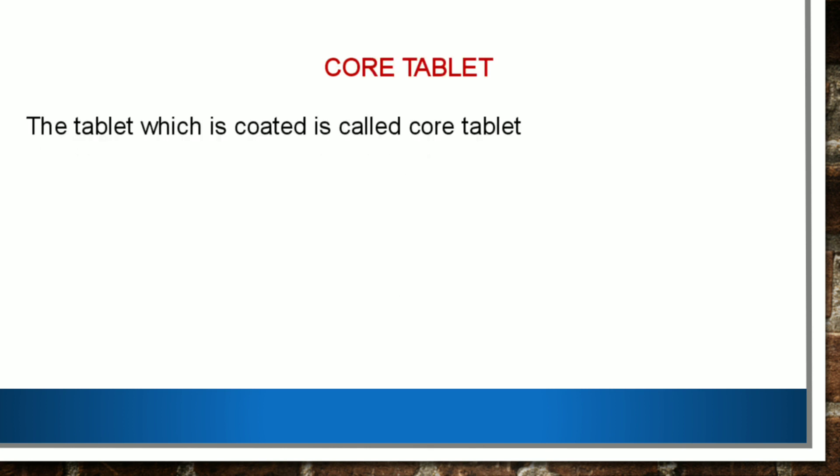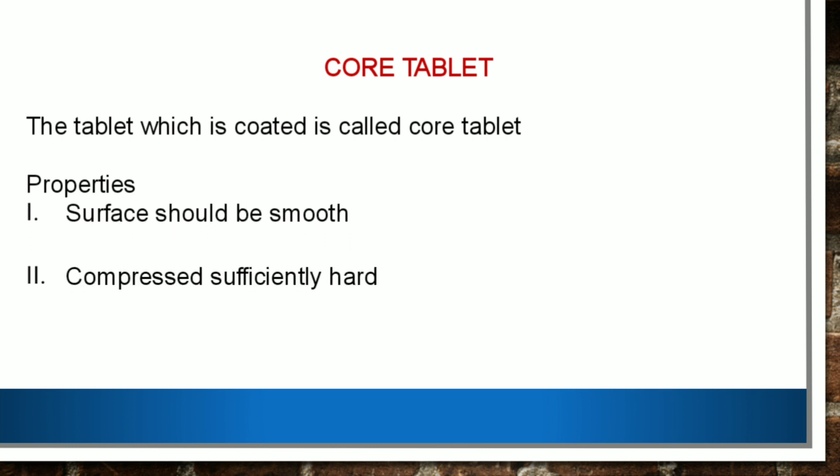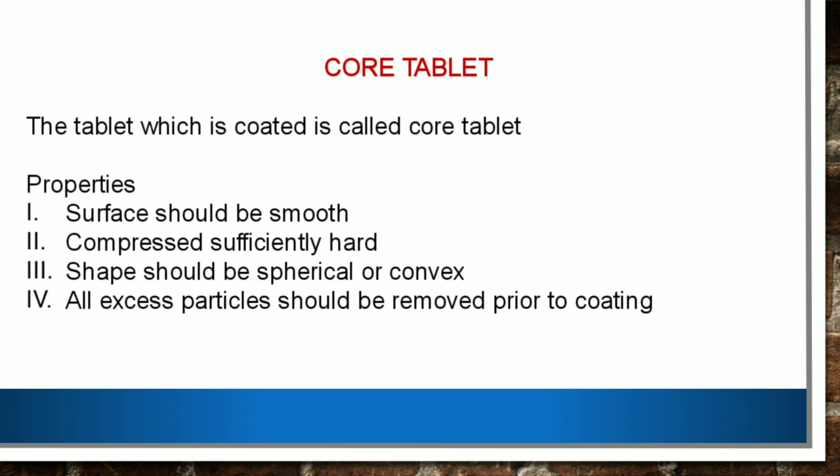The core tablet is the tablet on which we apply the coat — that is, the tablet which is to be coated is called the core tablet. The properties a core tablet should possess are: the surface should be smooth; it should be compressed sufficiently hard to withstand the entire coating process; the shape should be either convex or spherical; and all excess particles — any broken pieces of tablet — should be removed prior to coating.